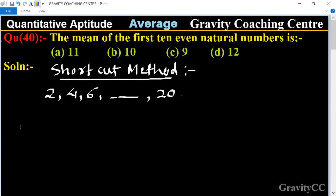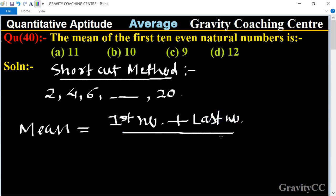So therefore their mean equal to first number plus last number upon 2. So here the first number is 2 and last number is 20 upon 2 equal to 22 upon 2, so it is cancel by 11. So equal to 11 is the required answer.